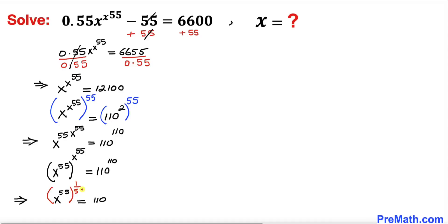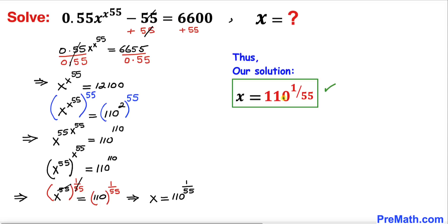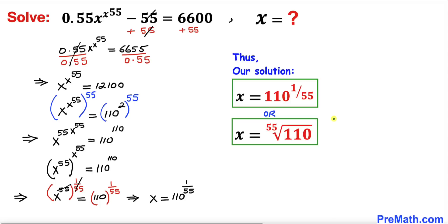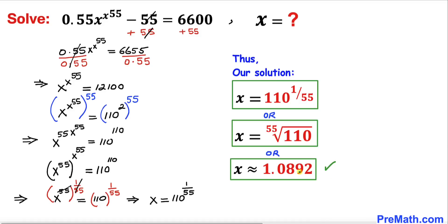Taking the power of 1 over 55 on both sides, the exponents on the left hand side cancel each other out, so we end up with x equal to 110 to the power 1 over 55. Our solution is x = 110^(1/55), which can also be written as the 55th radical of 110, or approximately x ≈ 1.0892. That's our final answer.